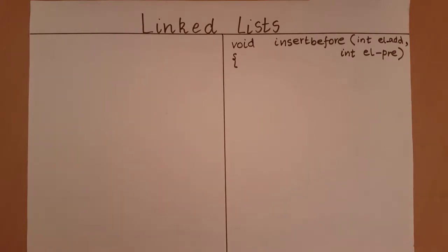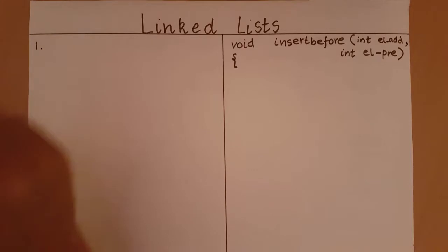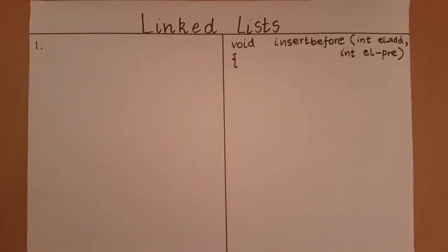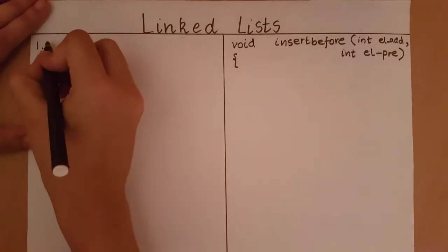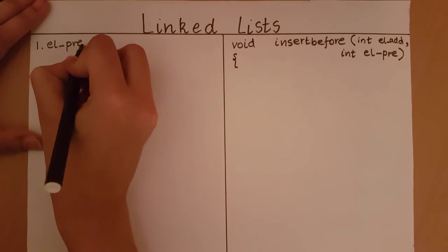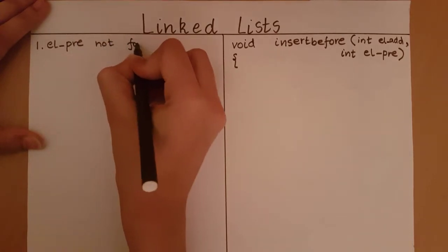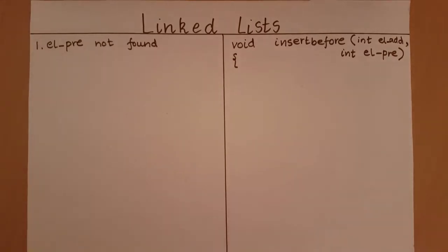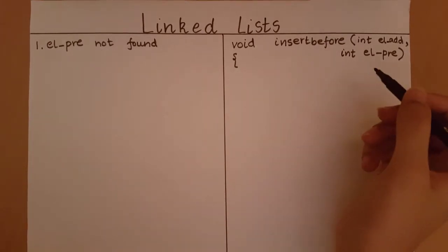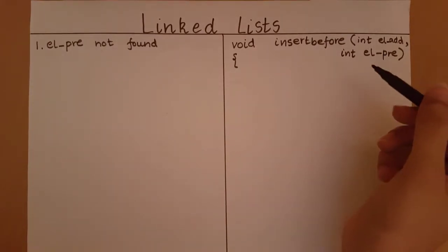Let's look at a few cases which we can encounter. The first case is that the pre-existing element given to the function is not found in the list. So if this pre-existing element is not found, the function does not know before which node we must perform the addition. So we want to stop the function right there. First, we must search for this pre-existing element.